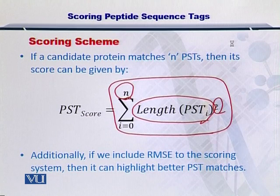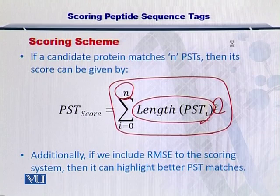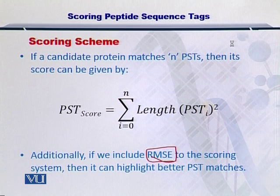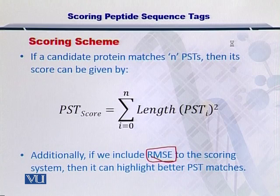This gives you the PST score for each protein. Each protein in the protein database will have a PST score which it obtained after being compared with the MS2 data from the experiment. Moreover, there is another concept we need to introduce here: the RMSE, the root mean squared error, which can better describe the quality of each PST match.